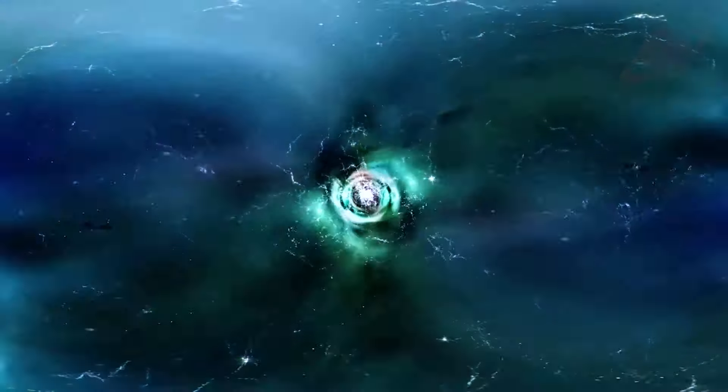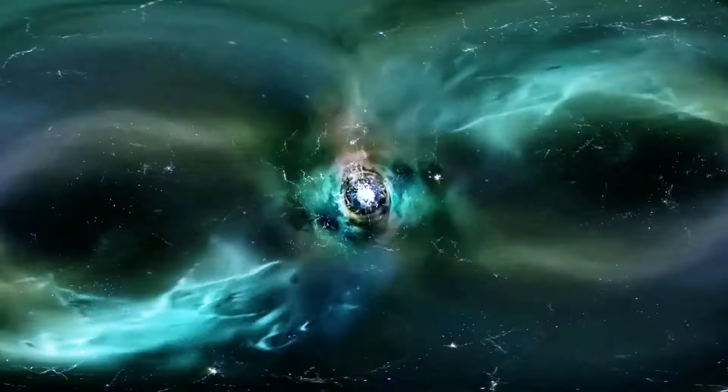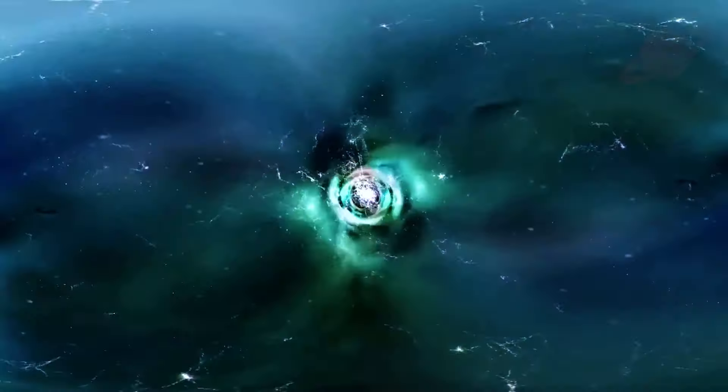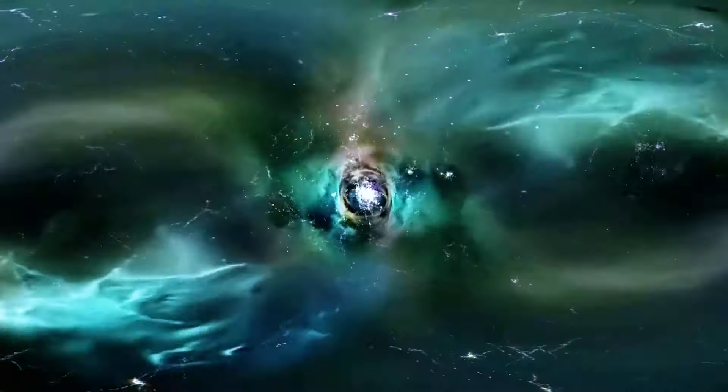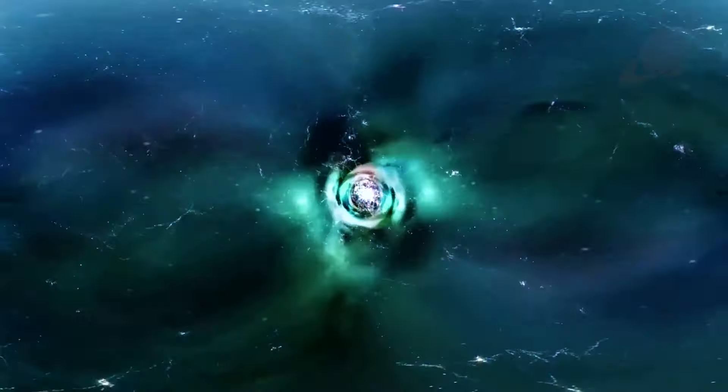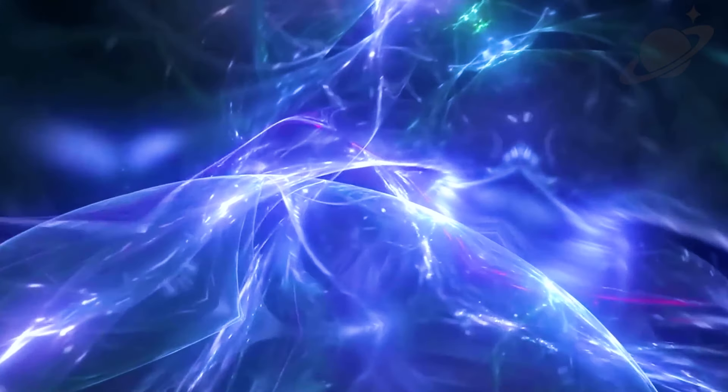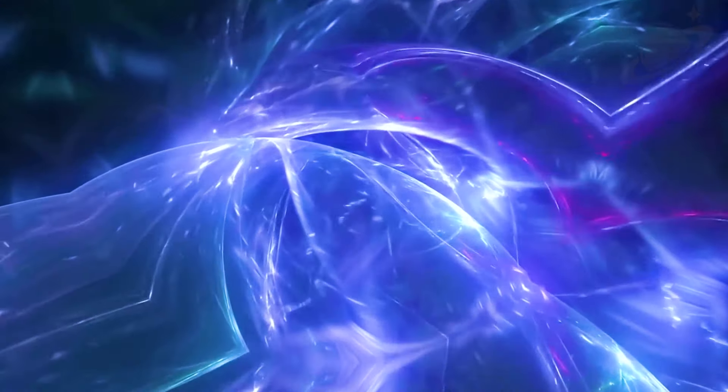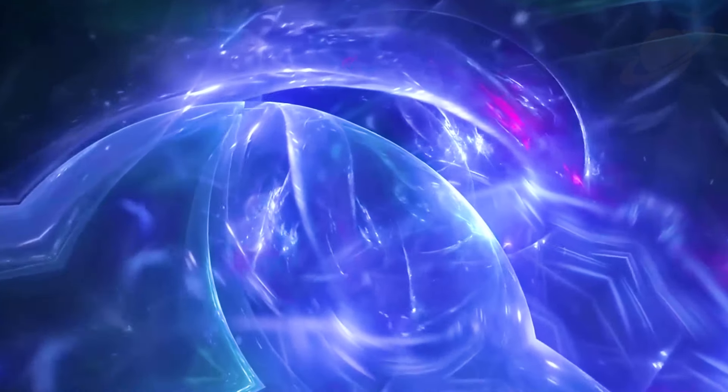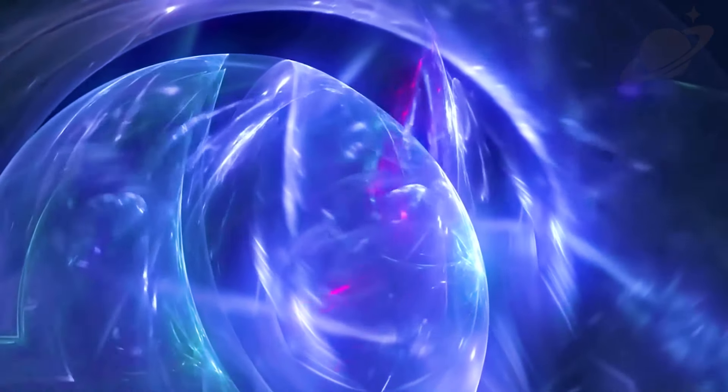Alongside dark energy, there's also dark matter, which makes up about 85% of all the stuff in the universe. Dark matter pulls things together with gravity, balancing out the expansion caused by dark energy. Currently, dark energy seems to be the dominant force, but there's a chance things could change. Some theories suggest that as the universe continues to expand, more dark matter might appear, gradually strengthening its gravitational pull. If dark matter's pull becomes stronger than dark energy's push, the universe could start to slow down or even reverse its expansion.